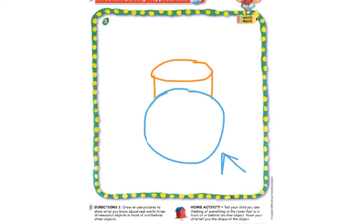What you can do at home is think of something in the room that is in front of or behind another object. You can work with your parents, a sibling, or a family member and talk about some objects and if they are in front or behind each other. You can also practice your other position words like above and below, and beside and next to as well.